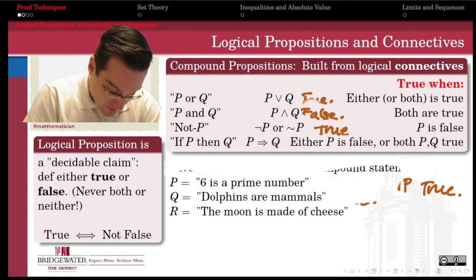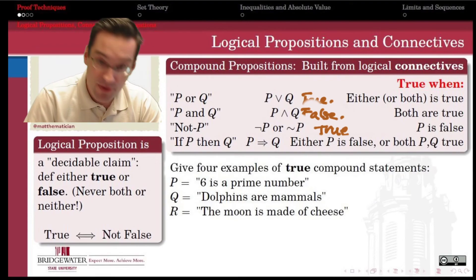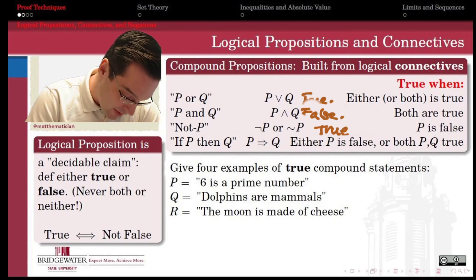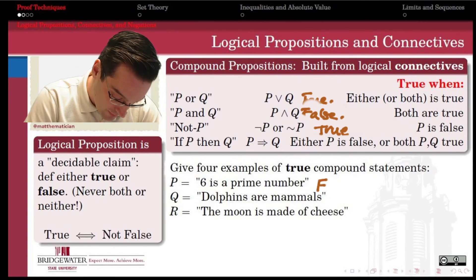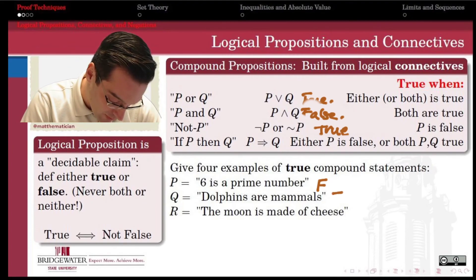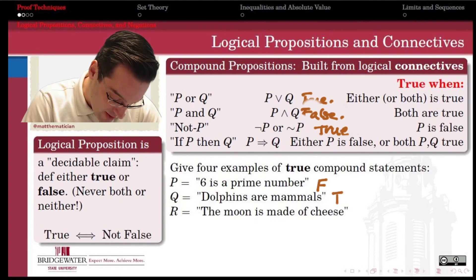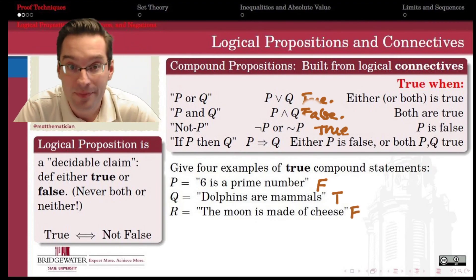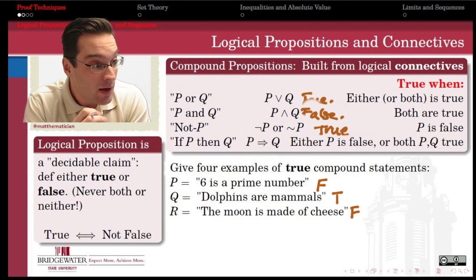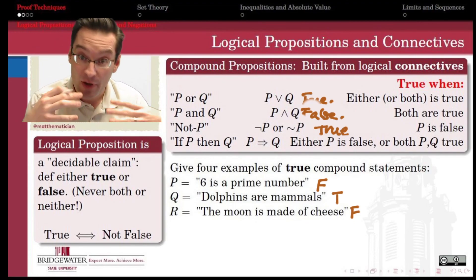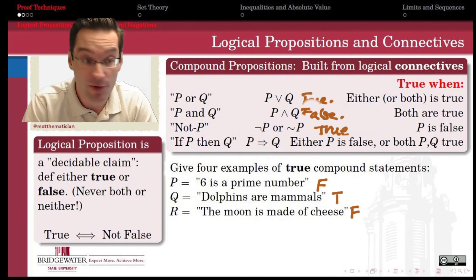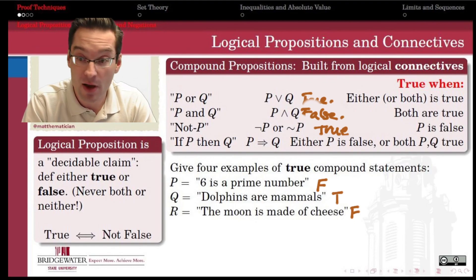With all of this, what I'd like for you to do is to take a few minutes and take these three statements. The statement P, which is that 6 is a prime number, which we're going to agree is false. The statement Q, dolphins are mammals, which we're going to agree is true. And the statement R, the moon is made of cheese, which I think we can also agree is false. I'd like for you in your small groups to spend five minutes or so coming up with four examples of true compound statements that are built out of those pieces, those P's, Q's, and R's. We'll write them up and we'll talk about why it is that they're true.